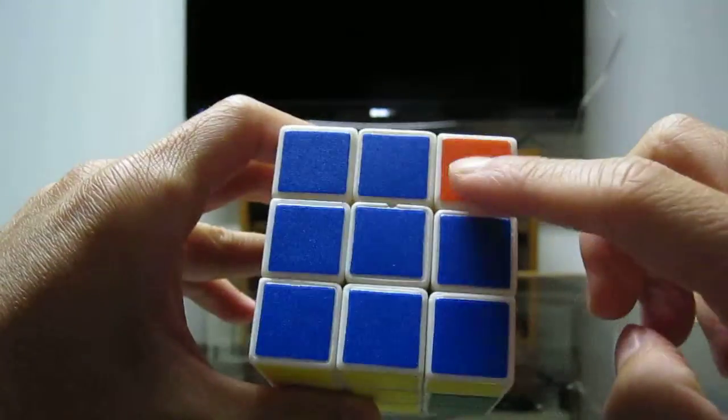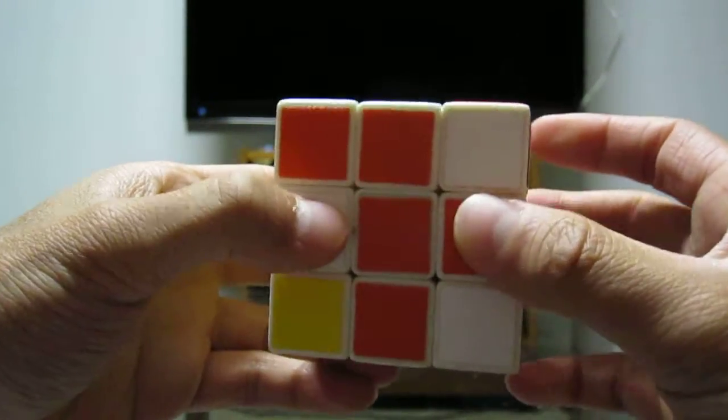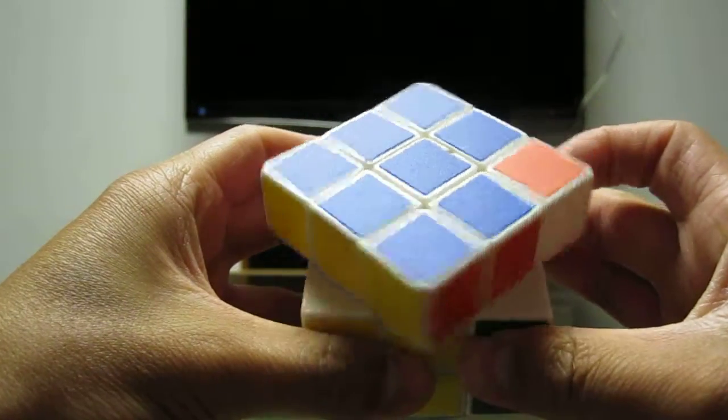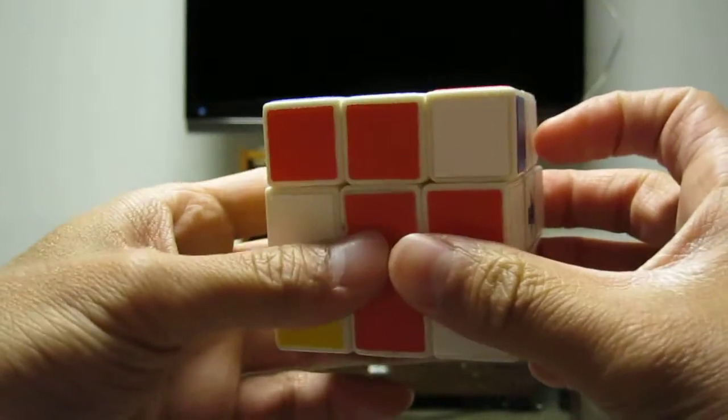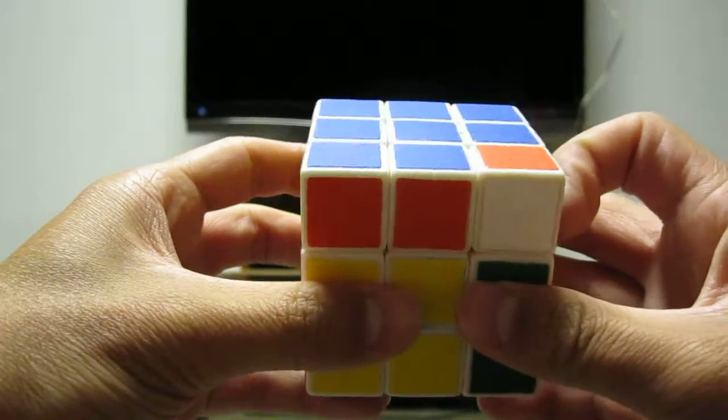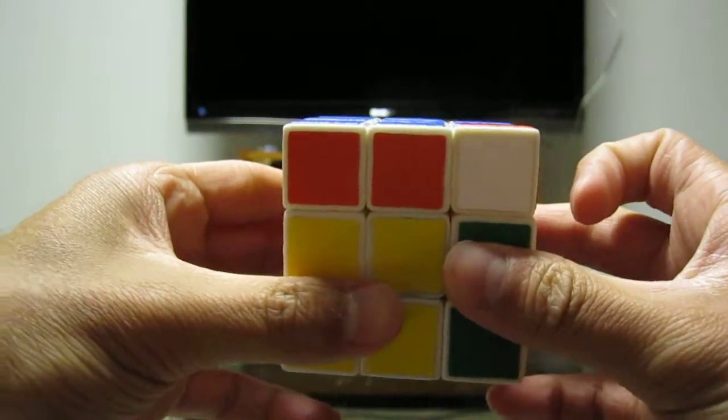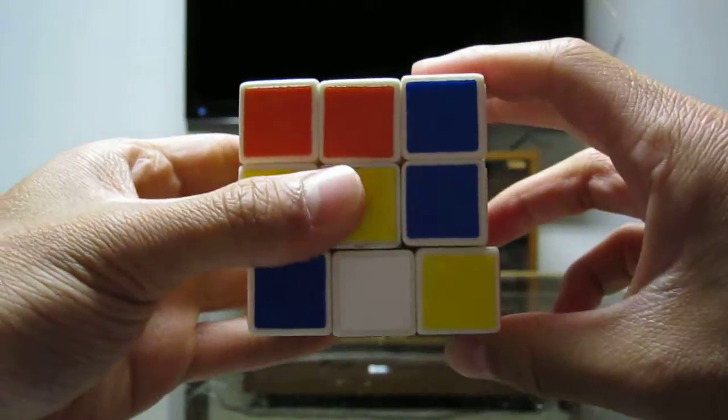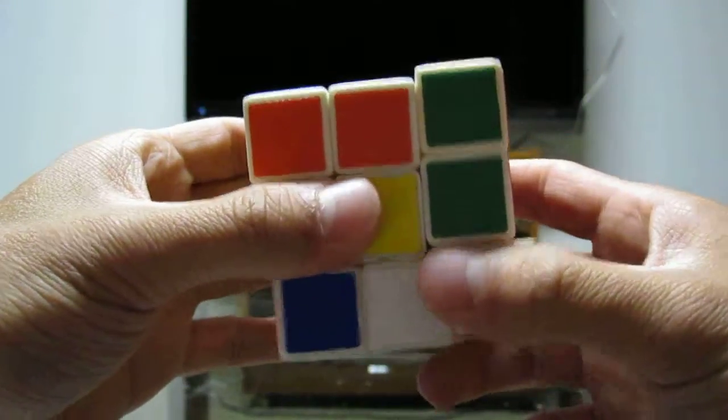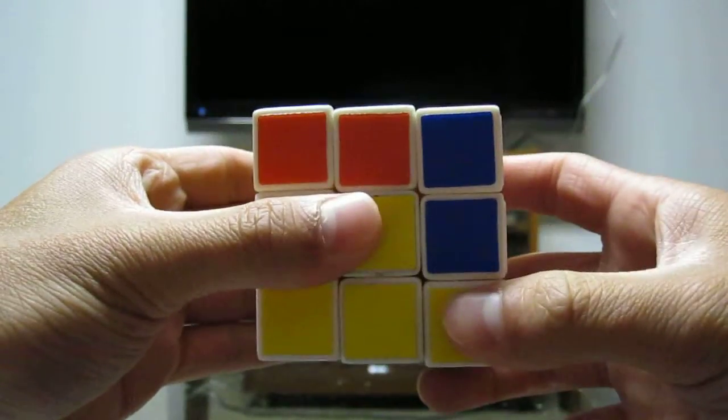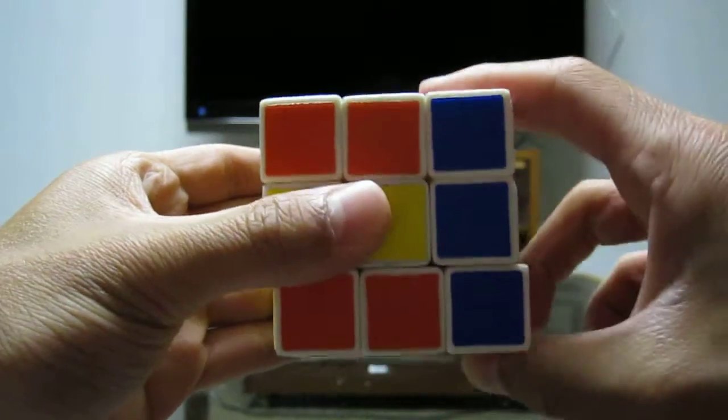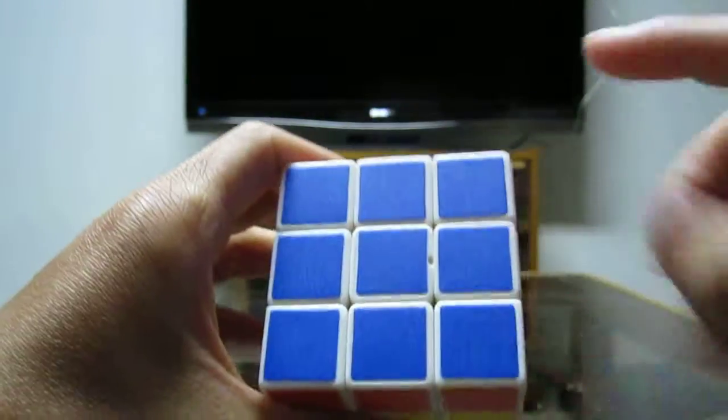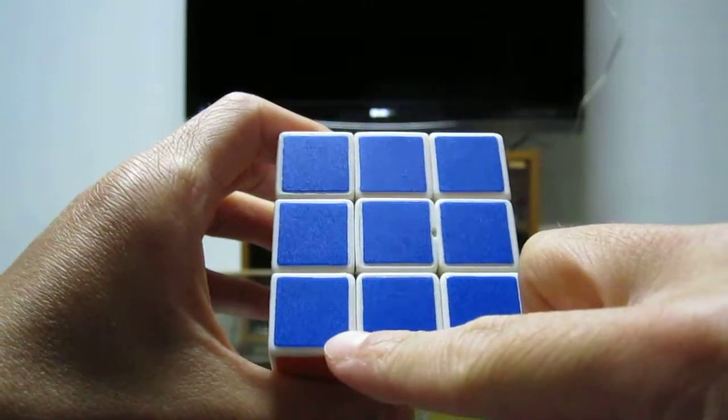And now to get this corner, do not turn the whole cube to this corner. Instead just turn the up layer to the next corner like this. Don't do this, do this. And you do the same algorithm. R inverted, down inverted, right down. And what do you know? You just got this corner and this whole side.